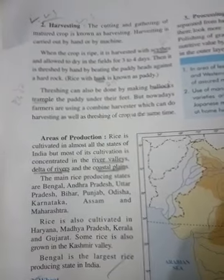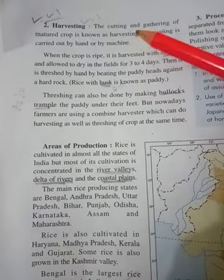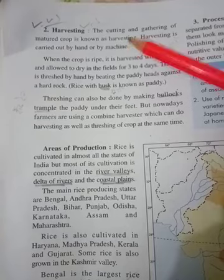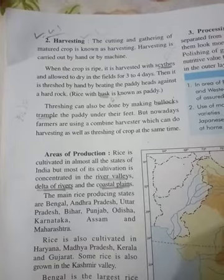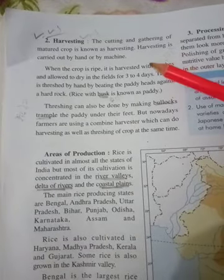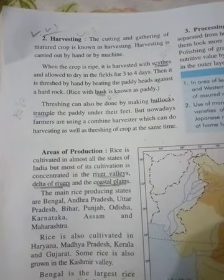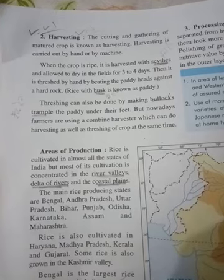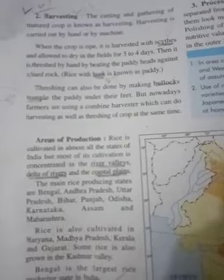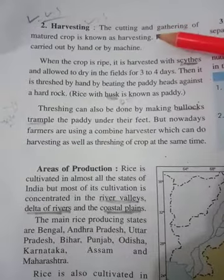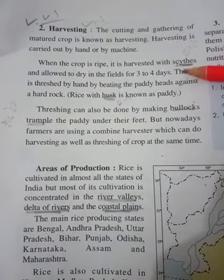The next point is harvesting. The cutting and gathering of a mature crop is known as harvesting. Harvesting is carried out by hand or machine. When the crop ripens, it is cut using a scythe, which is an iron tool, and then allowed to dry in the field for 3 to 4 days.